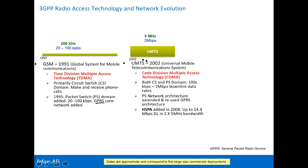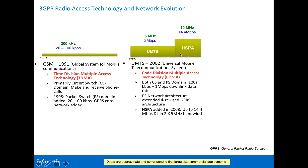Then in 2002, UMTS came out — with 5 megahertz bandwidth, jumping from 200 kilohertz, and giving you a data rate of 2 megabits per second — which was sizzling at the time. Further advancements in UMTS allowed you to use two 5 megahertz carriers together; that technology was called HSPA — High Speed Packet Access — and it could give you 14.4 megabits per second in that 10 megahertz bandwidth. HSPA was deployed around 2008.